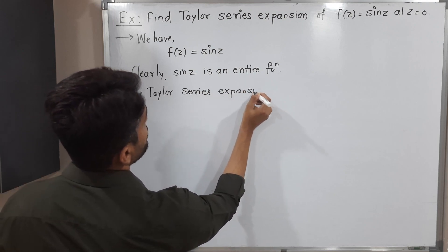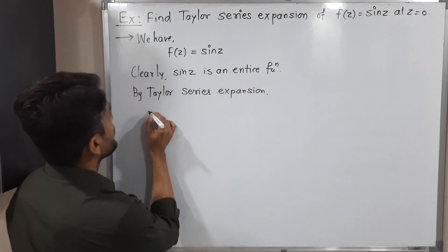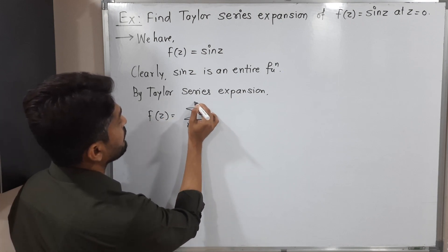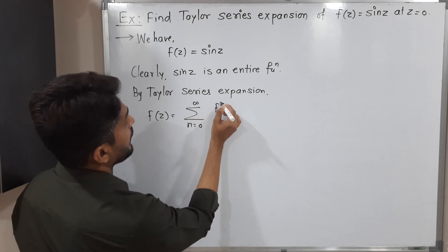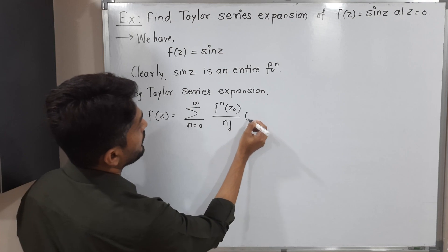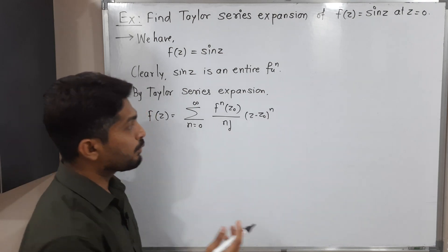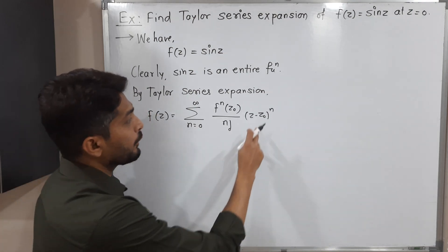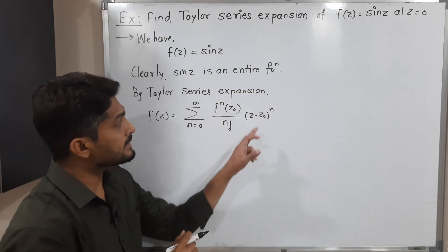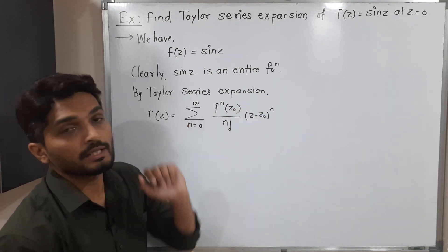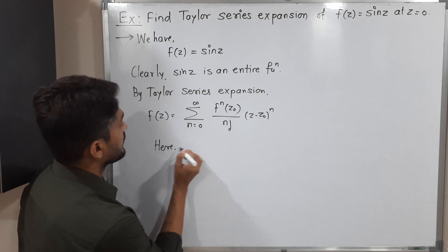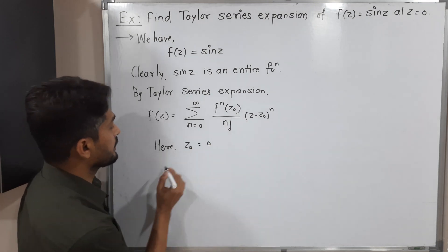By Taylor series expansion, I can write f(z) equals the summation — writing the general form — running from n=0 to infinity of the nth derivative of f at z0, upon n factorial, times (z minus z0) raised to n. So when we want the Taylor series at point z0, we express the given function in this way. But here z0, the given point, is 0.